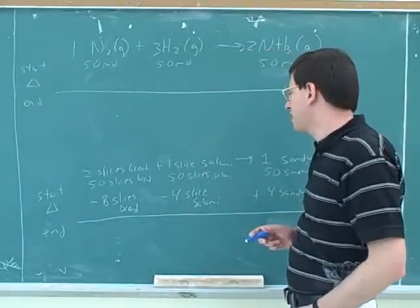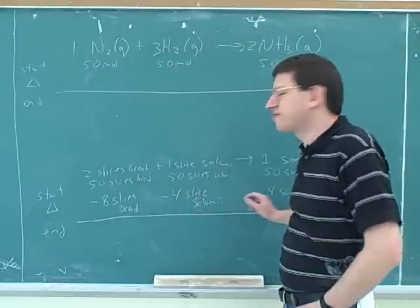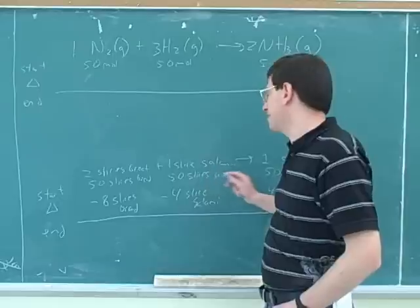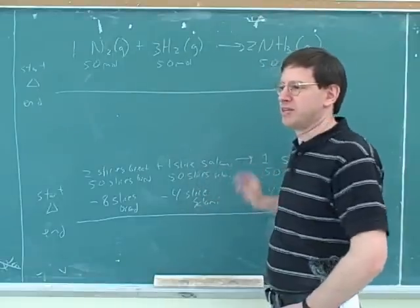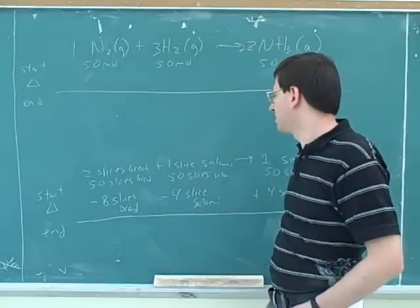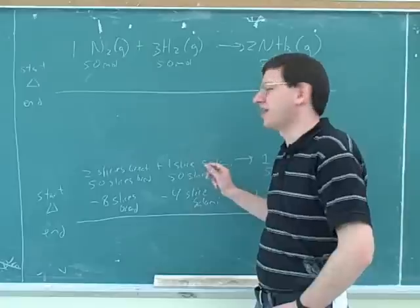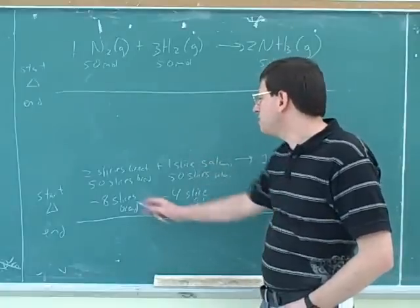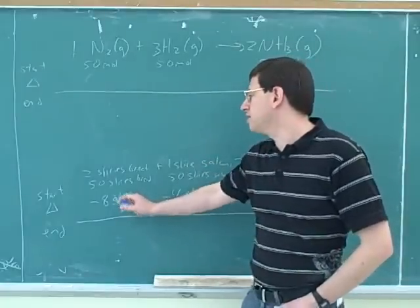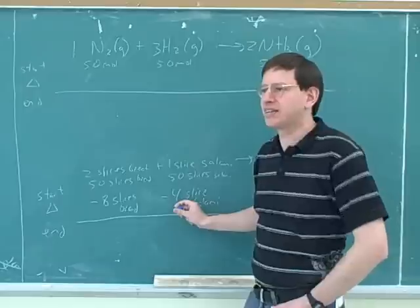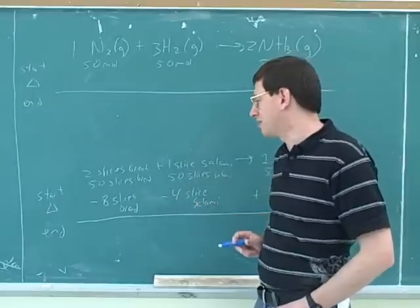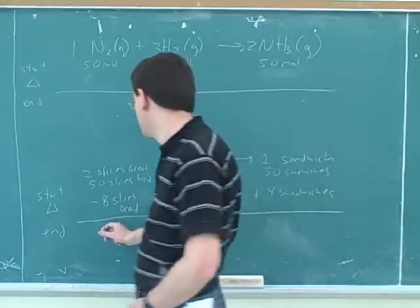So one big lesson that we're getting here is these numbers don't have to be the same as each other. Of course, these numbers don't have to be the same either. I just chose to pick them to be the same. It's perfectly possible that in your cupboard you could have different numbers of bread and salami to start with. How do you get these numbers? Well, you take one number and use the stoichiometric coefficients to get the other numbers. That's a very common stoichiometry problem.